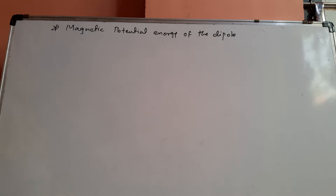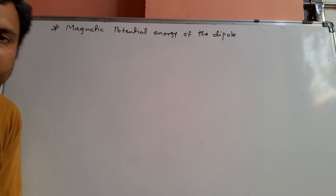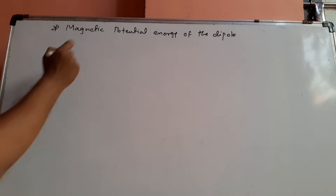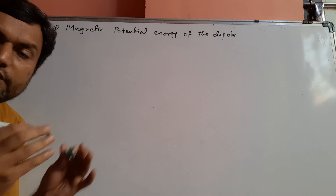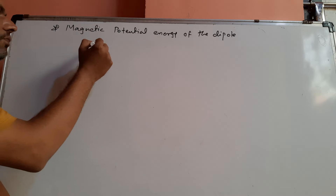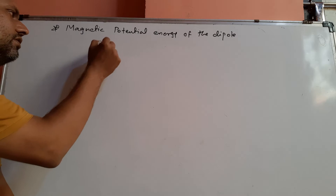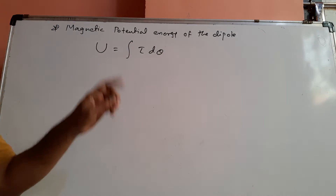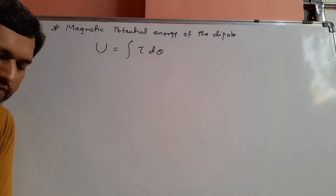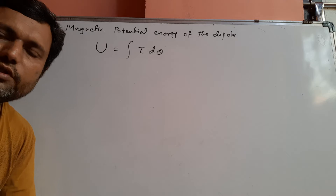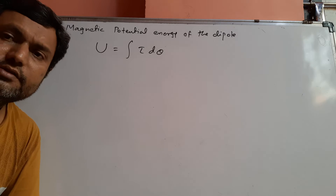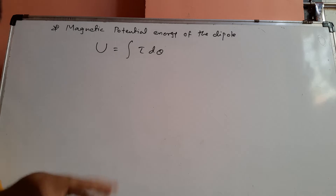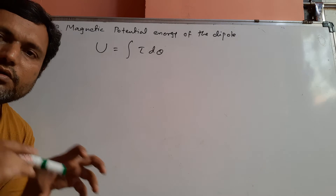In this video, we will discuss the magnetic potential energy of the dipole. Work done in rotating the magnetic dipole in a uniform magnetic field is stored in the form of potential energy, and that work done is given by U equals the integration of torque d-theta. This is the work done stored as potential energy of that dipole in a uniform magnetic field, discussing the behavior of a magnetic dipole in a magnetic field.